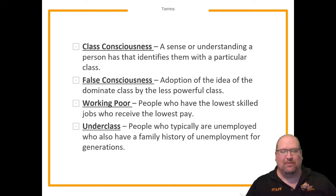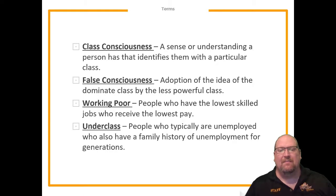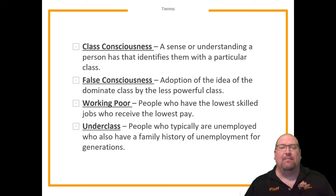First, we have to understand some terms relating to poverty. First is class consciousness — a sense or understanding a person has that identifies them with a particular class; in other words, a person who knows what social or socioeconomic class they're in. False consciousness is the adoption of ideas of the dominant class by the less powerful class. It deals with people believing they're in the social class they're supposed to be in, even though a higher class might be manipulating them to keep them in a lower class.